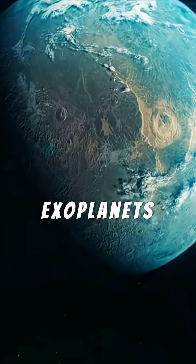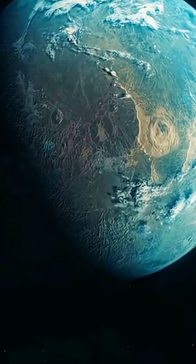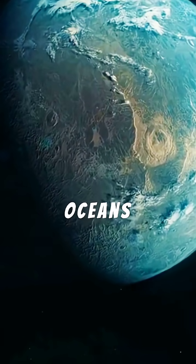Beyond our solar system, exoplanets like Kepler-452b, Earth's potential cousin, hint at oceans and skies.